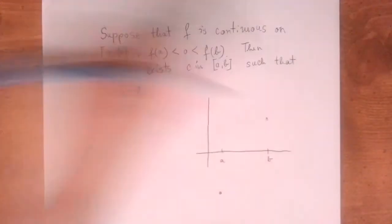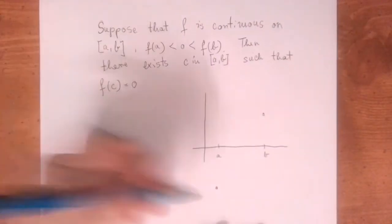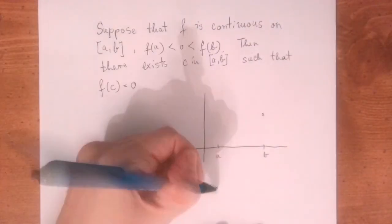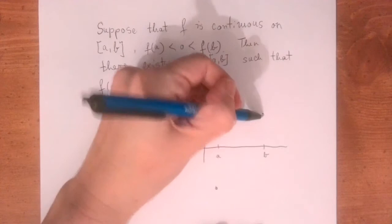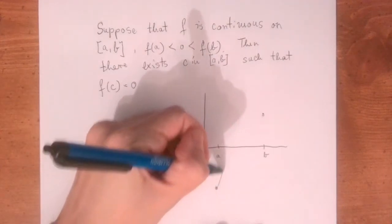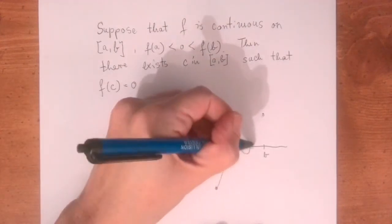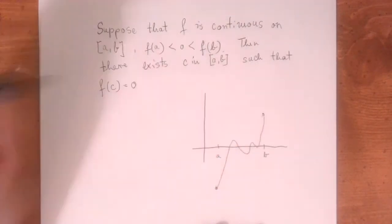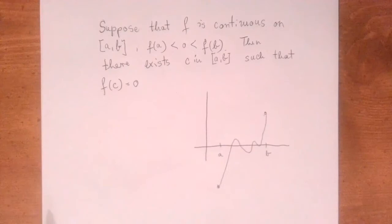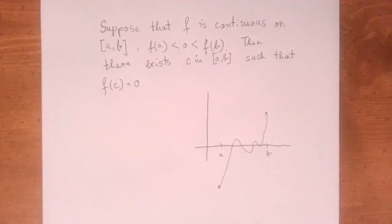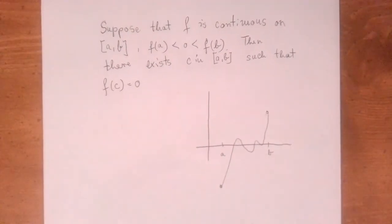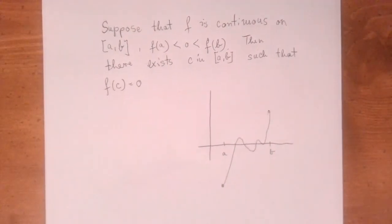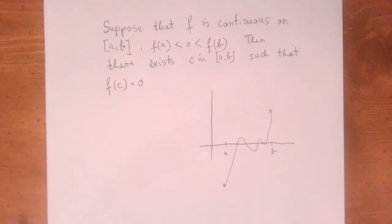Basically, the only way we can go from here to here continuously is if we hit a zero. There could be more than one, but the Intermediate Value Theorem states that there is at least one. To prove this, we're going to use the least upper bound property.